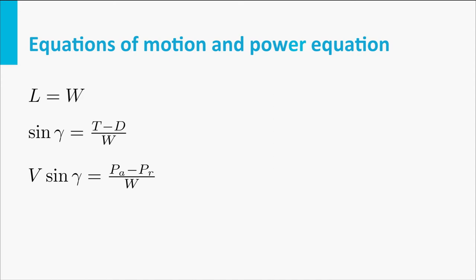The equation of motion, parallel to the airspeed vector, tells us that the difference between thrust and drag determines the flight path angle gamma. If we consider a given aircraft weight, then the climb angle will be maximum when this difference of thrust and drag is maximum as well.